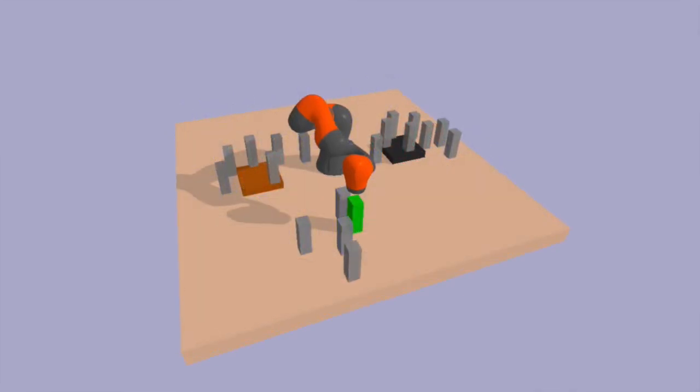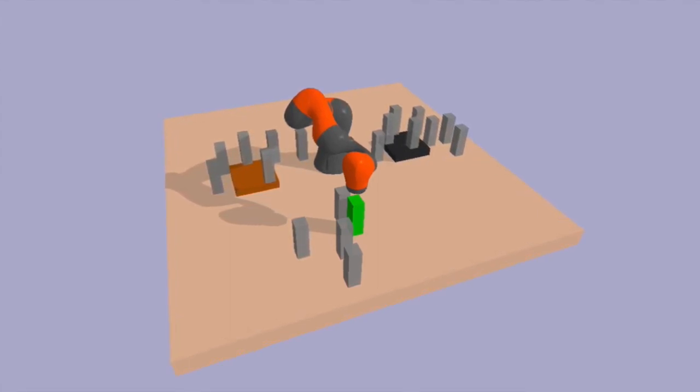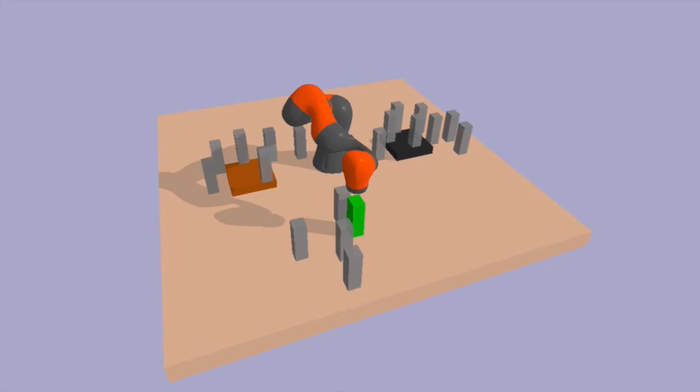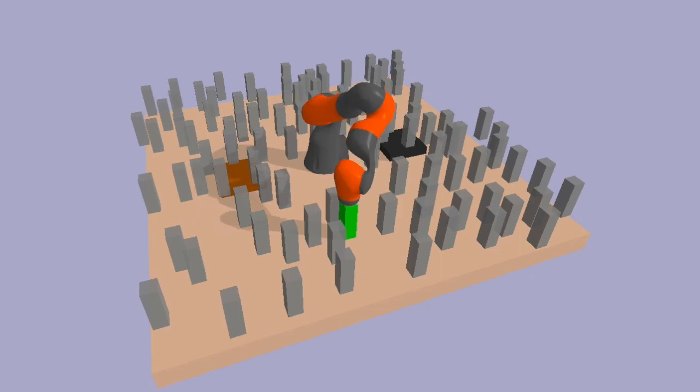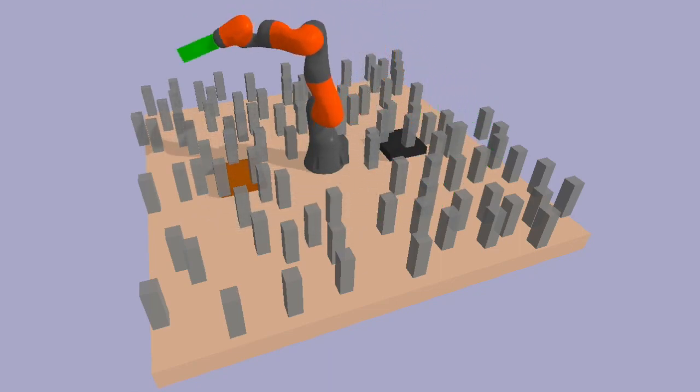PLOY then uses the importance scores to determine which objects are contextually extraneous. Ignoring these objects sets up a much simpler version of the planning task, which enables much more efficient planning. The plan found succeeds on the original problem instance. Thank you for watching.